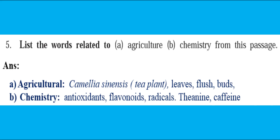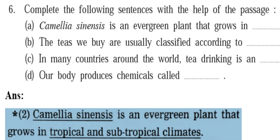Next activity: list words related to (a) agriculture and (b) chemistry from this passage. Words related to agriculture: Camellia sinensis (tea plant), leaves, flush, birds, etc. Words related to chemistry: antioxidants, flavonoids, radicals, theine, caffeine, etc. Next activity: complete the following sentences with help from the passage. Camellia sinensis is an evergreen plant that grows in tropical and subtropical climates. The teas we buy are usually classified according to the size of their leaves.